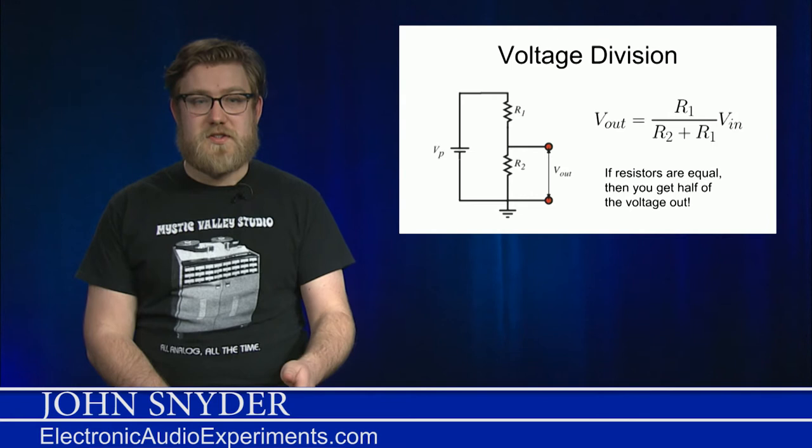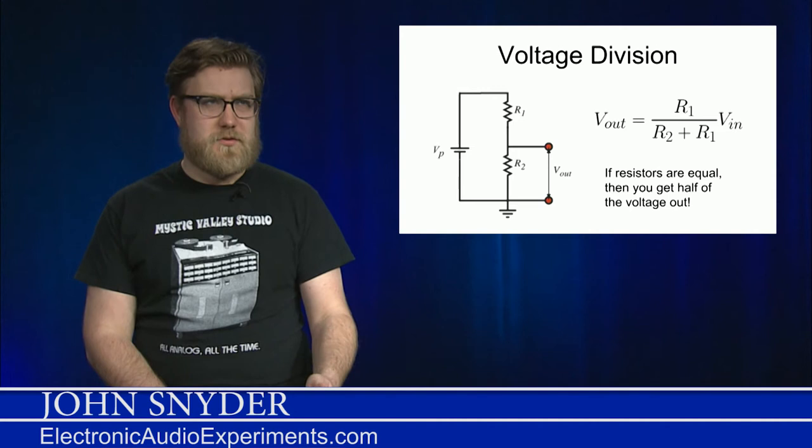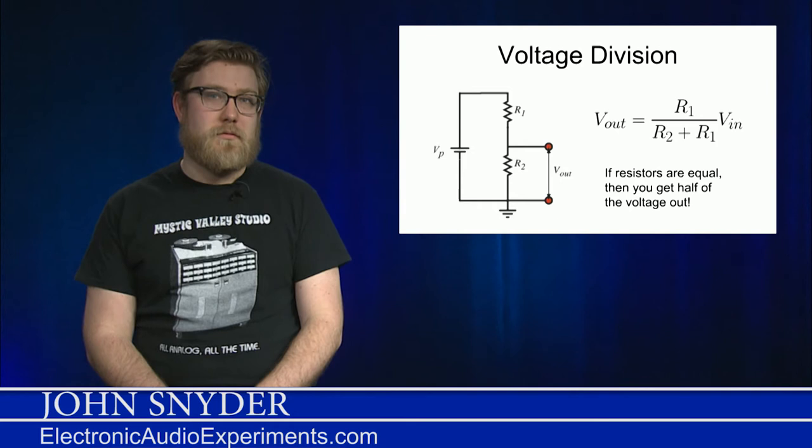This circuit is something similar to what you'd see in a passive volume control like on a stereo. When you turn the knob, the ratio of R1 to R2 is going to change, and thus your output voltage or the output signal strength is going to change as well.